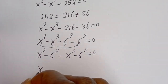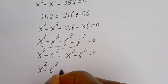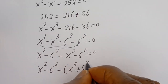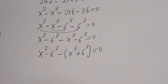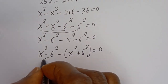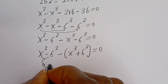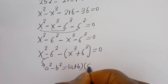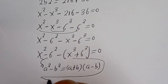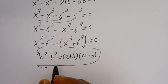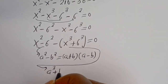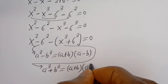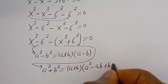We have s squared minus 6 squared, minus s to the power of 3 plus 6 to the power of 3, equals 0. Now we apply two algebraic identities: the difference of squares, a squared minus b squared equals (a+b)(a-b), and the sum of cubes, a cubed plus b cubed equals (a+b)(a squared minus ab plus b squared).